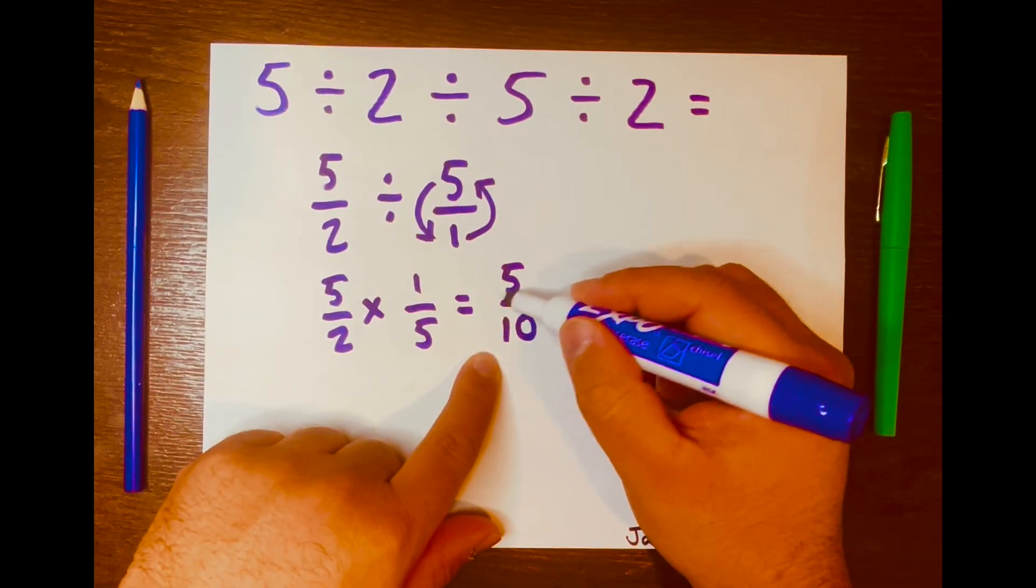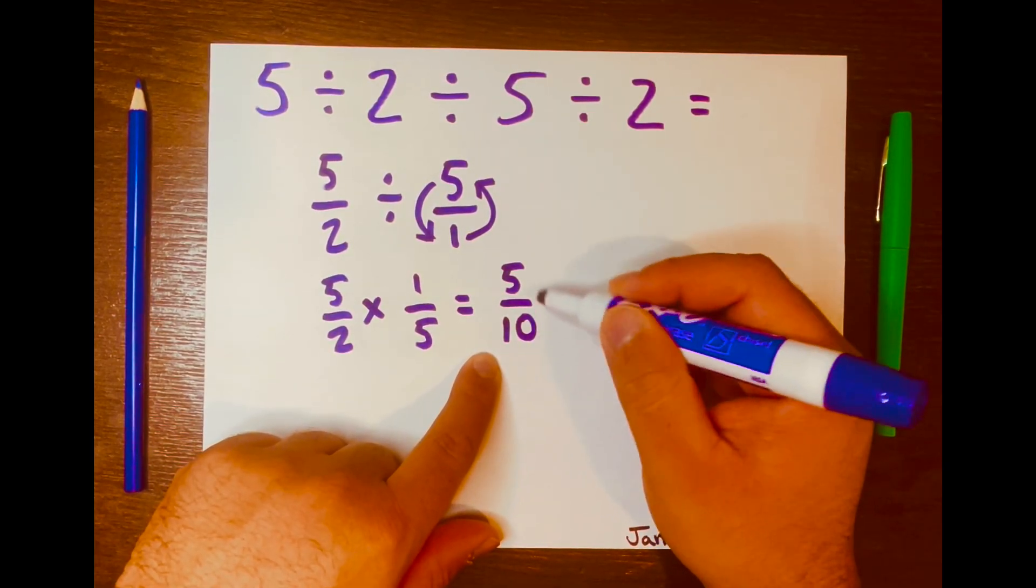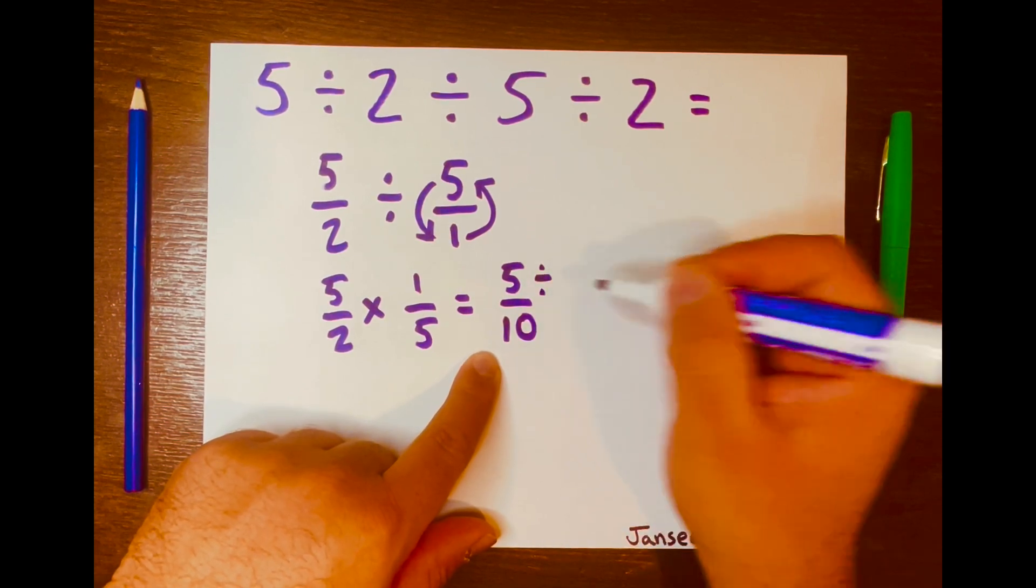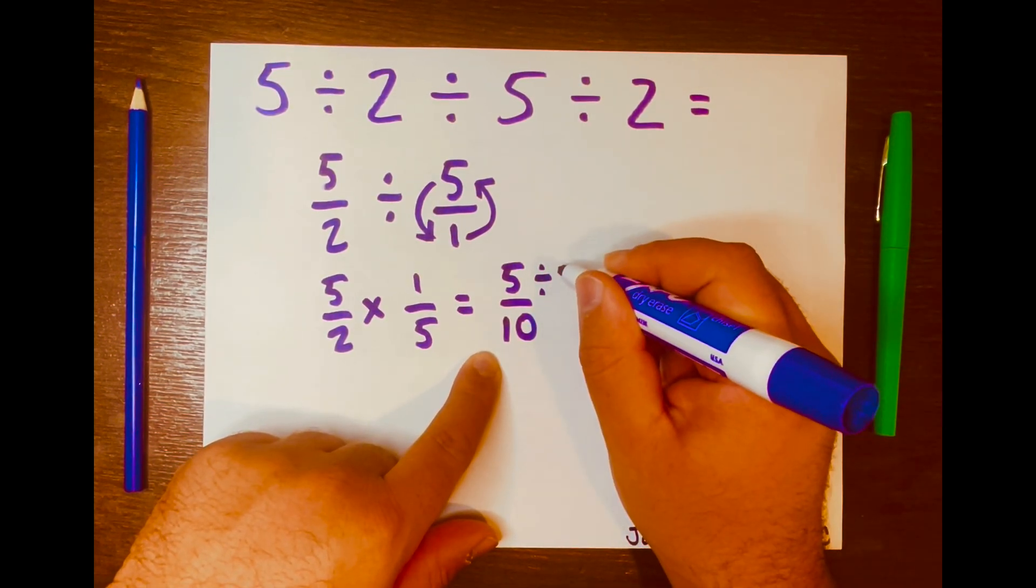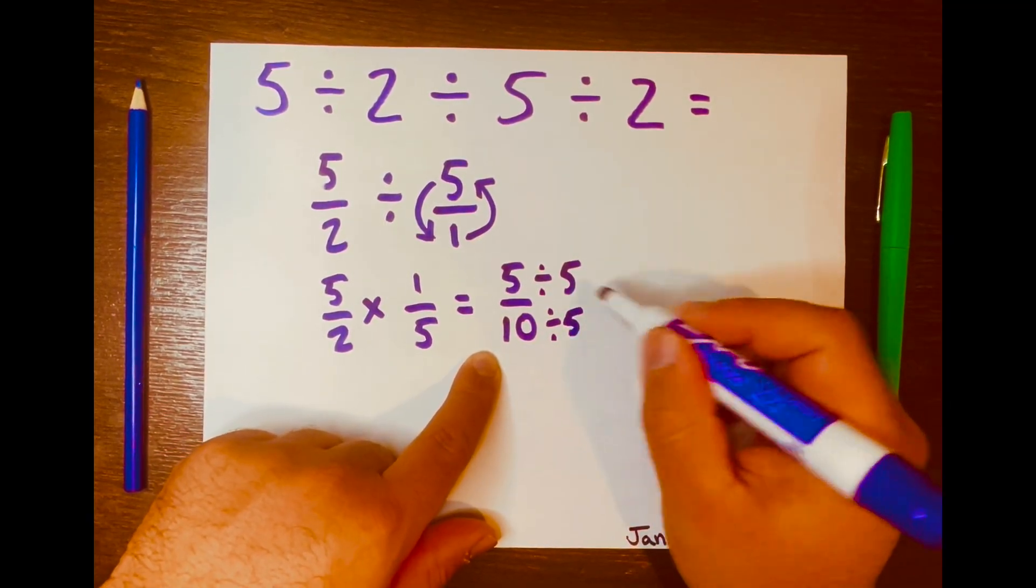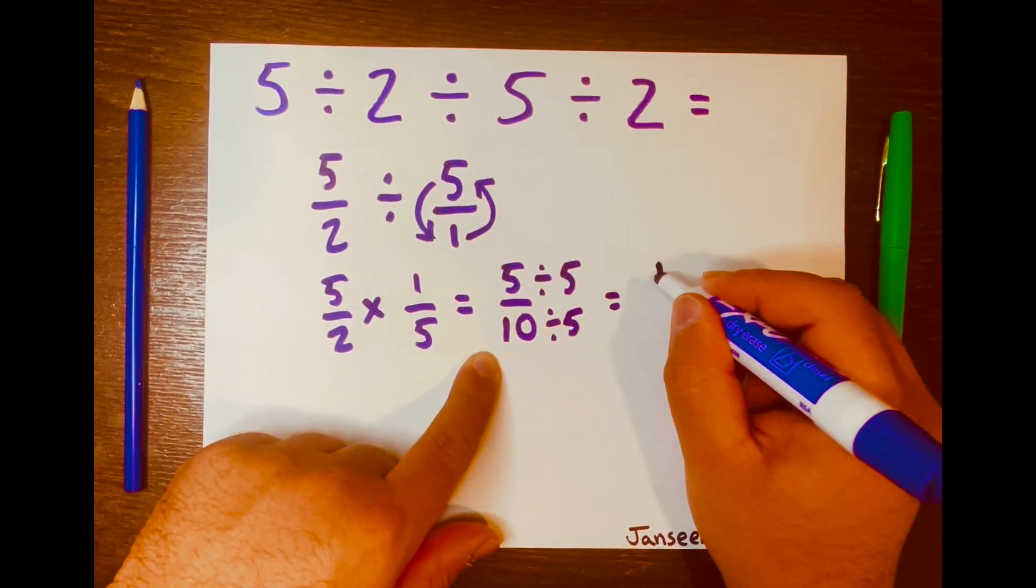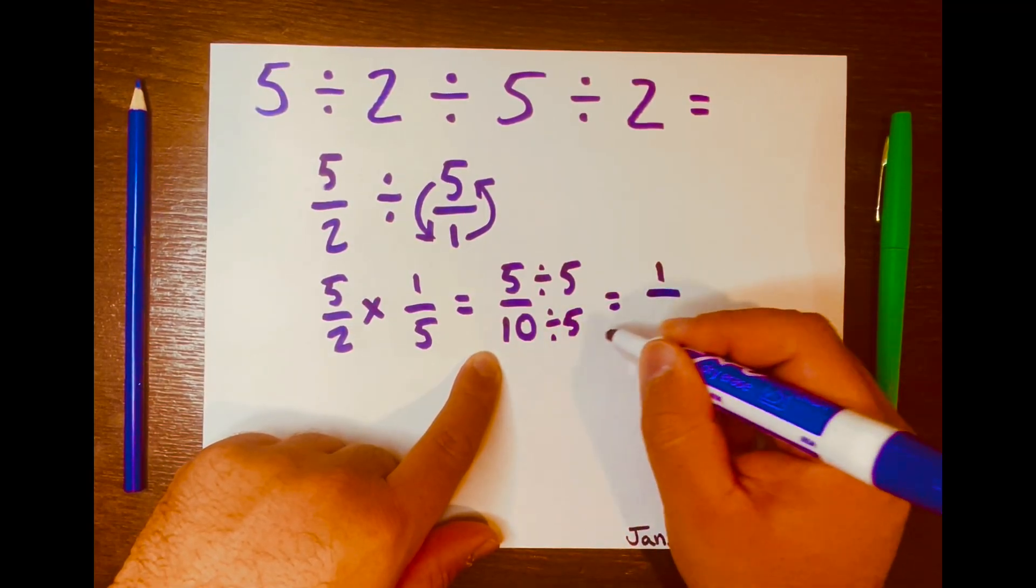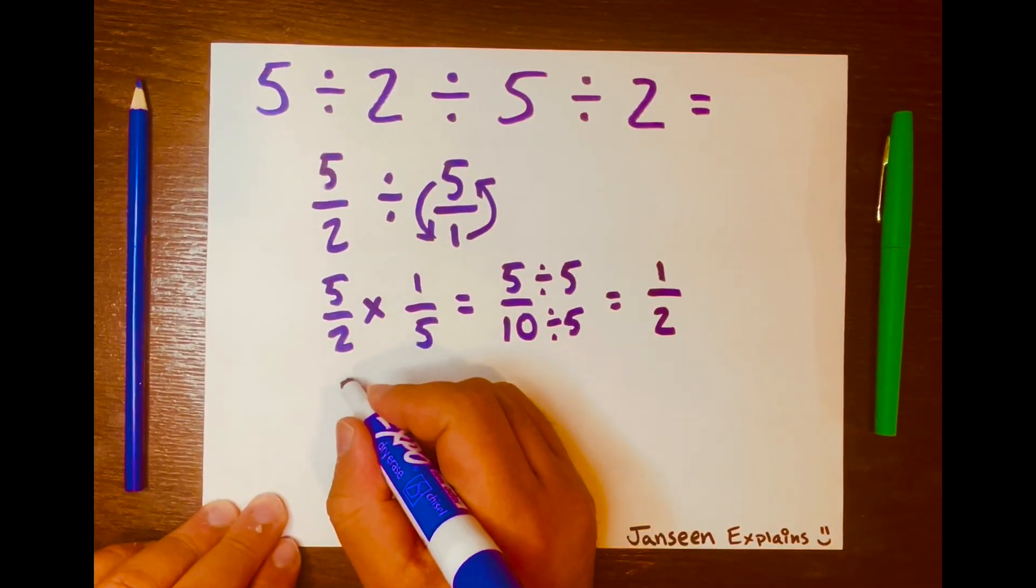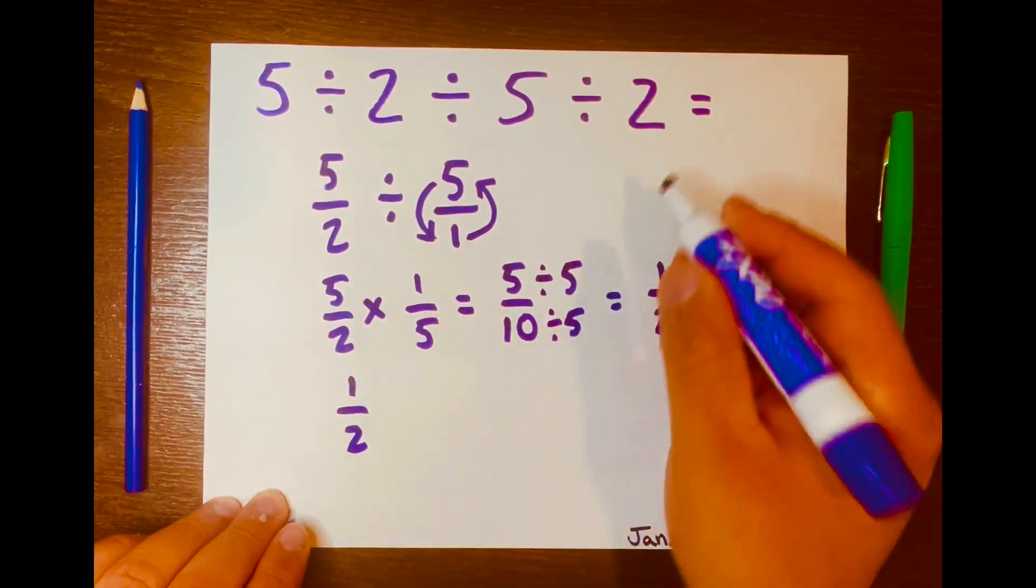Now we have 5 over 10, and this can be simplified further. Let's do 5 divided by 5. So 5 divided by 5 is 1, and 10 divided by 5 is 2. So now we have 1 over 2, and we'll write it here: 1 over 2.